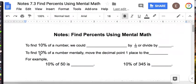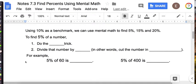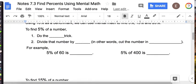Now, let's look at using 10% as a benchmark. We can use that to find 5%, 15%, and 20%. So to find 5% of a number, we're going to do the 10% trick. Now, think about how 5% compares to 10%. It's half, right? So we can take 10%, so move it one place to the left, and then divide that number by 2. In other words, cut the number in half.